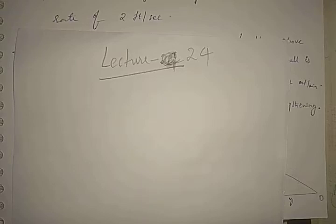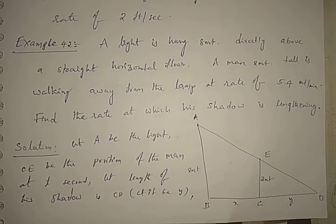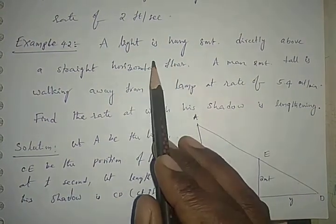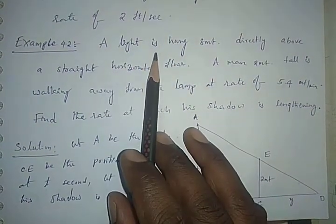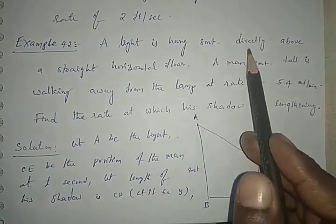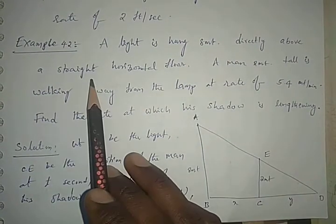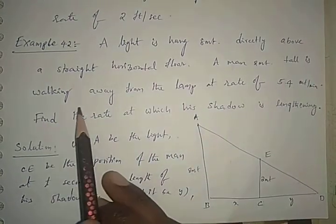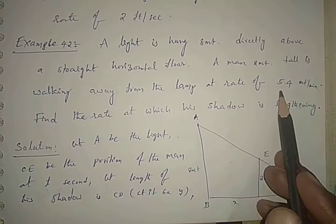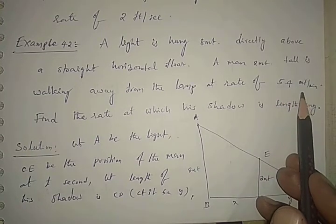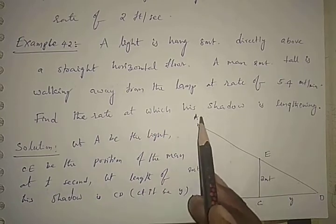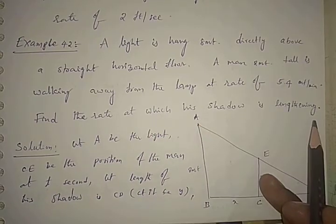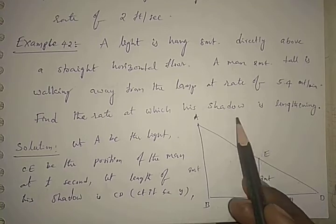Welcome to this video lecture. In this video I am going to teach you the street light problem. A street light is hung 8 meters directly above a straight horizontal floor. A man 2 meters tall is walking away from the lamp at the rate of 2.4 meters per minute. We have to find the rate at which his shadow is lengthening — the rate of change in shadow.